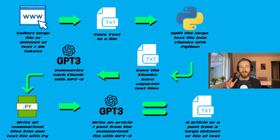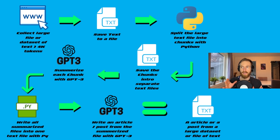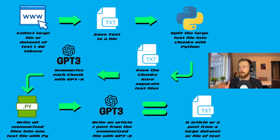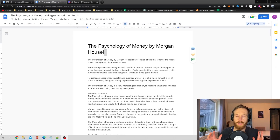Then we take GPT-3 and summarize each of these chunks. At the end, we write all the summarized files from the chunks into one text file with Python. Then we take GPT-3 again and use that file to write an article or a post from the summarized file. We'll end up with an article, post, or summary from that large initial dataset, compressed into something much smaller.